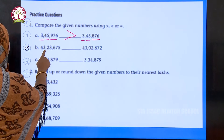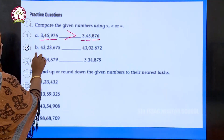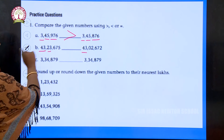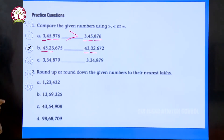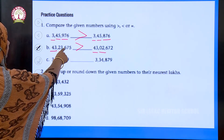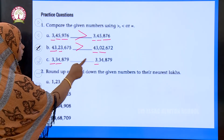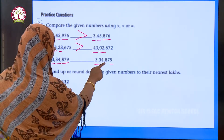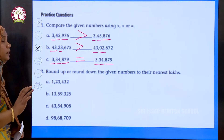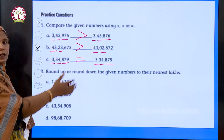Question B: 43 lakhs 23,675 versus 43 lakhs 2,672. Lakhs period: both are 43 — equal. Thousands period: 23 thousand versus 2 thousand — 23 is greater. So 43 lakhs 23,675 is greater. Question C: 3 lakhs 34,000 879 versus 3 lakhs 34,000 879 — they are equal. Compare numbers period wise: lakhs first, then thousands, then ones.